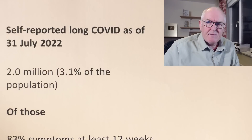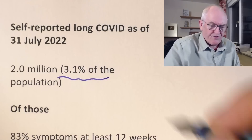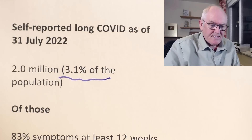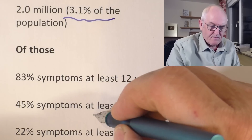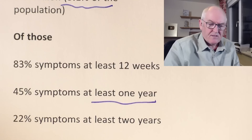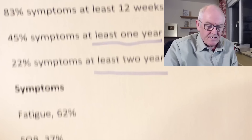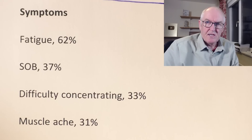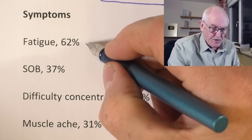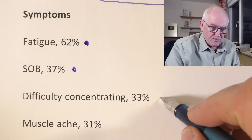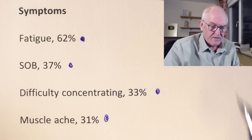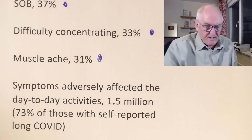Long COVID is still a problem — we looked at neurological complications and Alzheimer's disease after COVID this week. In the UK at the moment, 3.1% of the population are complaining of protracted symptoms after COVID. 83% of those two million people have had symptoms for at least 12 weeks; 45% have had symptoms for at least a year; 22% for two years. Main symptoms are fatigue, shortness of breath, difficulty concentrating, and muscle aches — some more neurological, some more respiratory. Symptoms are adversely affecting day-to-day activities in 73% of those with long COVID.